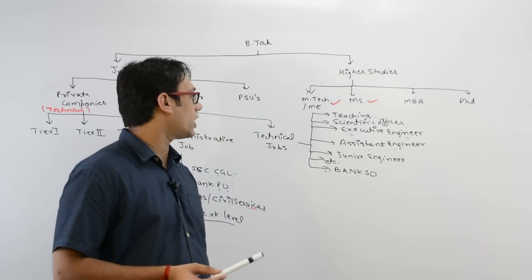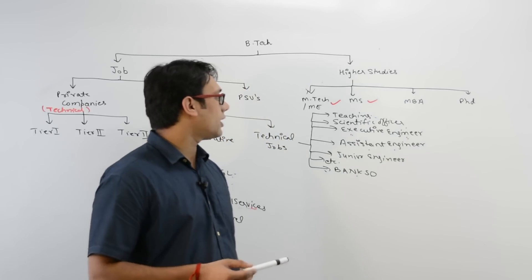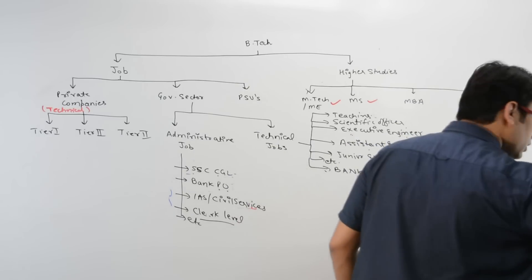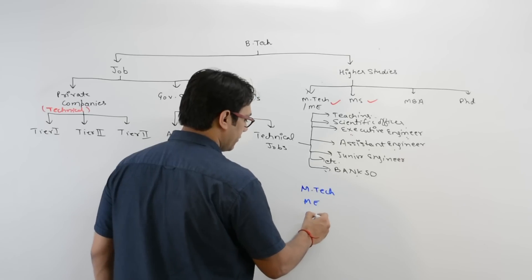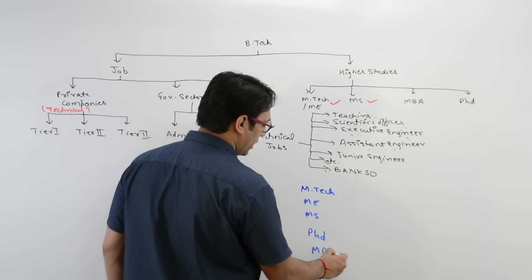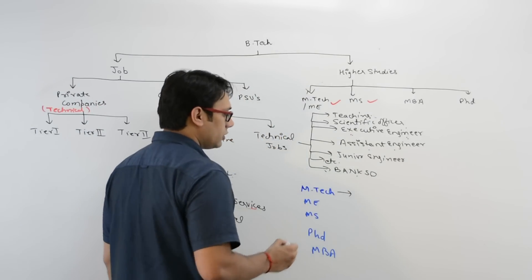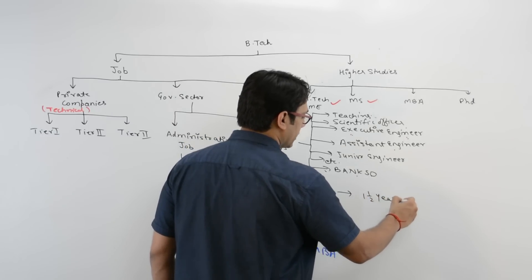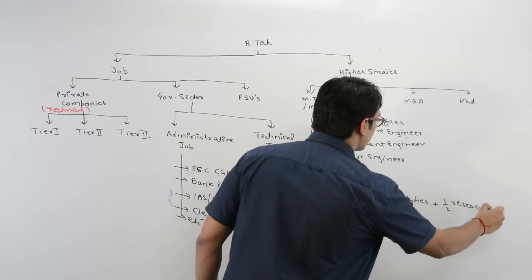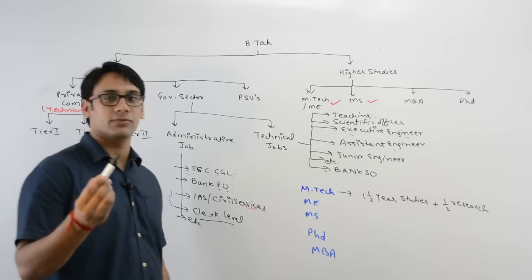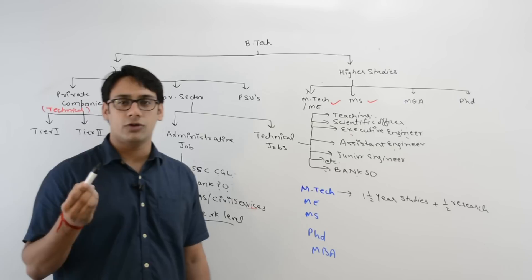We were discussing the different job choices available. Now let us look at the difference between M.Tech, ME, MS, MBA, and PhD. In case of M.Tech, you will have somewhere around one and a half years of studies and then half a year of research. M.Tech is basically designed as a job-oriented course.